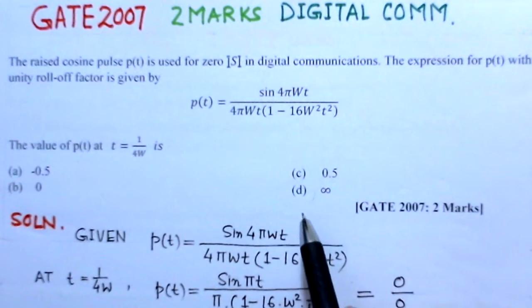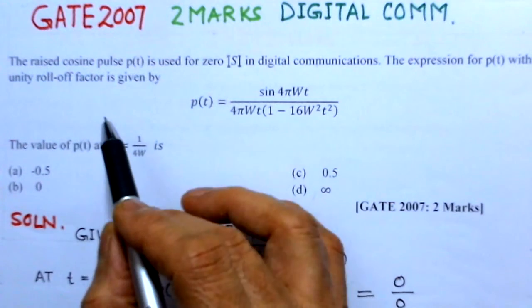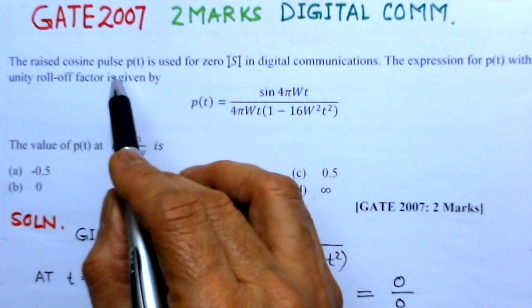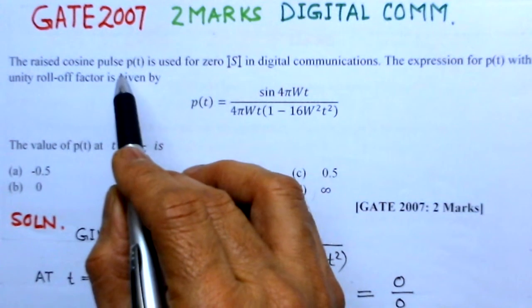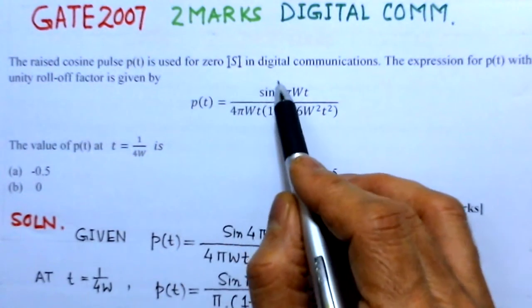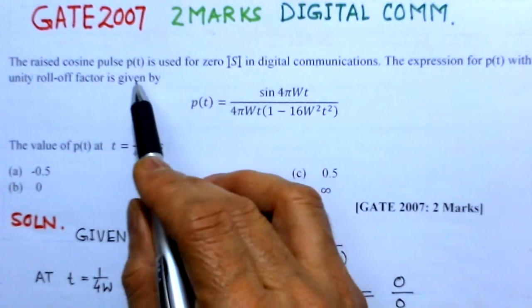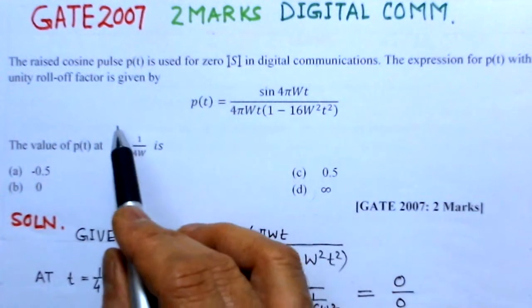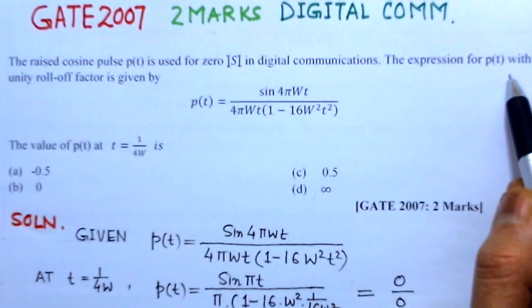So basically, we will just summarize what the problem is. It is a problem of the particular type of pulse being used for zero inter-symbol interference and the value for P(t) is given here and it is being said, this P(t), this pulse as a function of time has a unity roll-off factor.